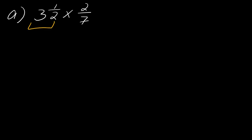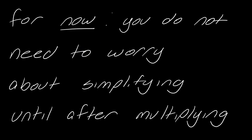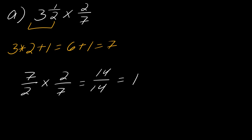For my 3 and 1 half — remember, I'm going to take 3 times the denominator plus 1. So that's going to be 6 plus 1, which equals 7. So I can rewrite this whole thing as 7 over 2 times 2 over 7. If I multiply these together, I get 14 over 14. What does 14 over 14 simplify to? That simplifies to 1. So that's what I mean from earlier — you don't have to worry about simplifying beforehand. Just wait until you've multiplied everything together and then simplify if possible.